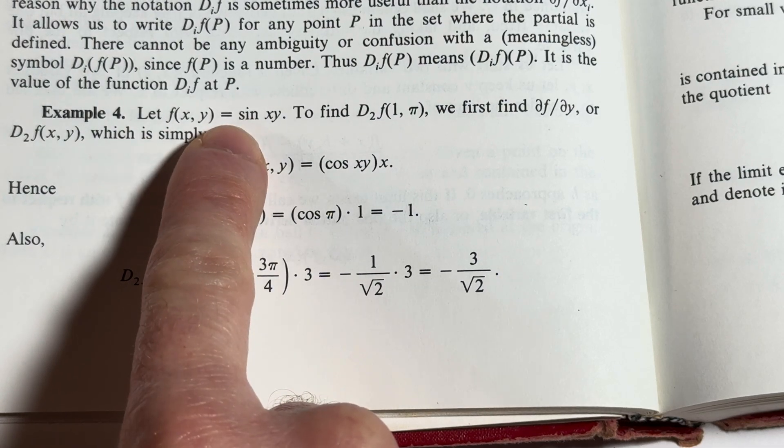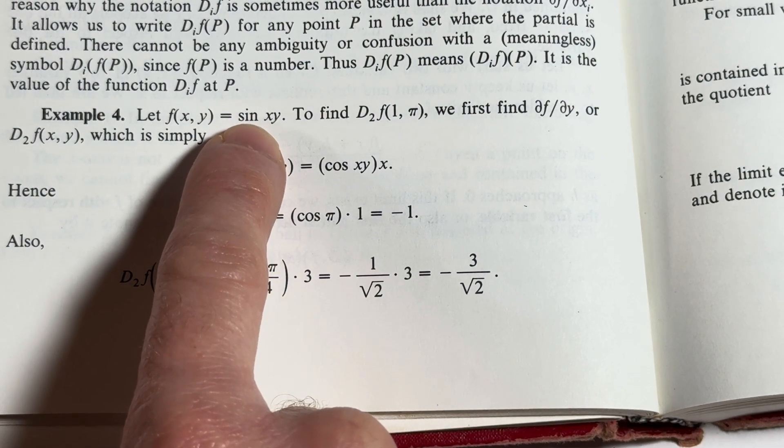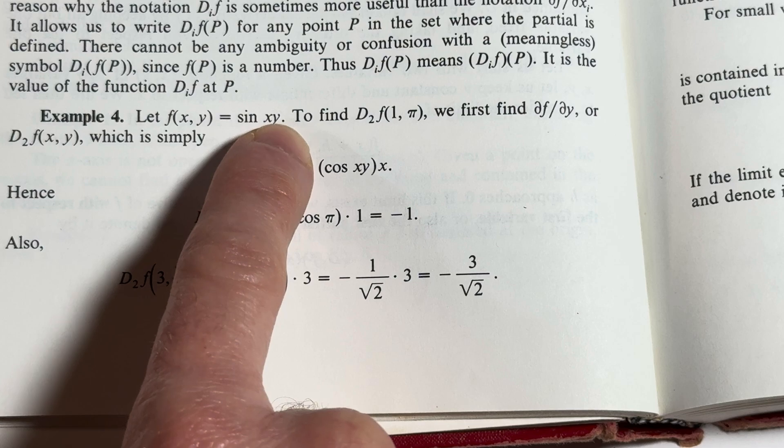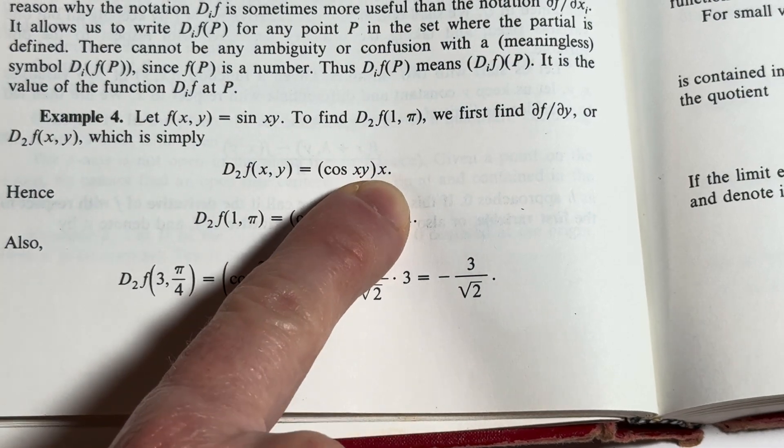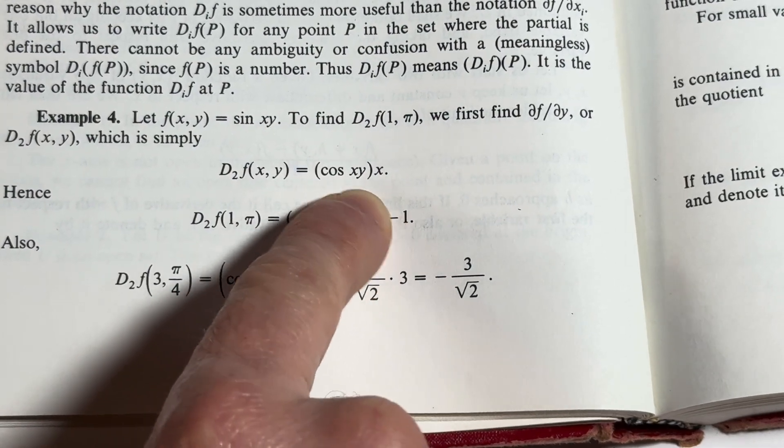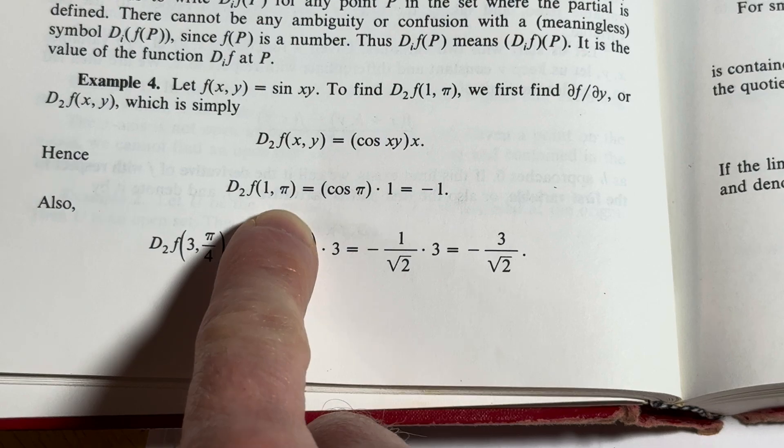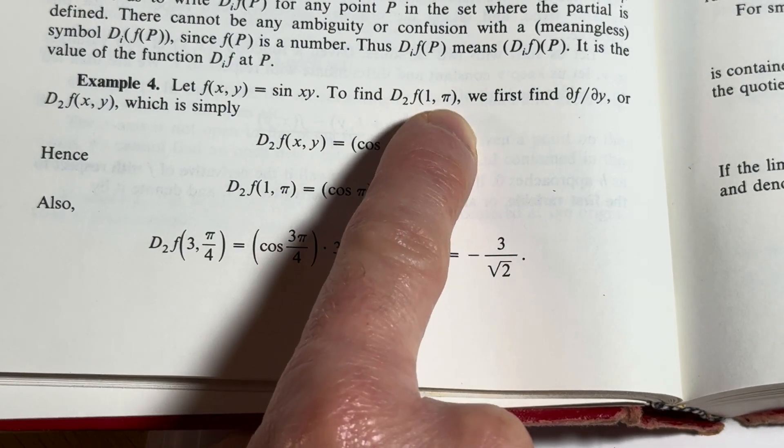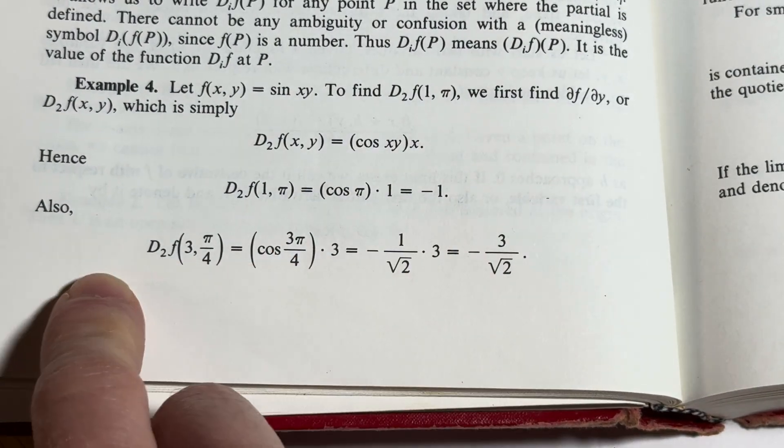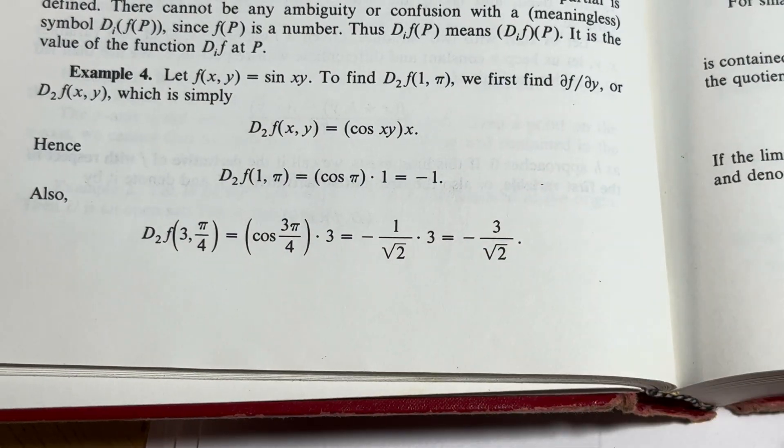the derivative of sine is cosine, and then you use the chain rule. So you're taking the partial with respect to y, right? So derivative of y is one, you're left with an x. That's how you get that x there. So you get x times cosine x, y. And then you just plug in x equals one y equals pi, cosine of pi is negative one. So you get that. And there's another example there.